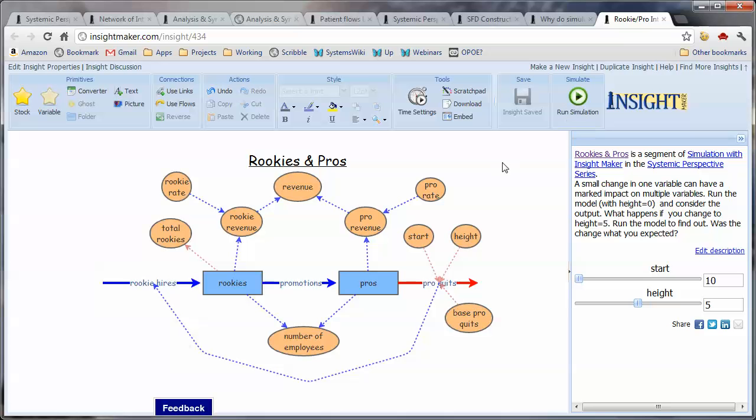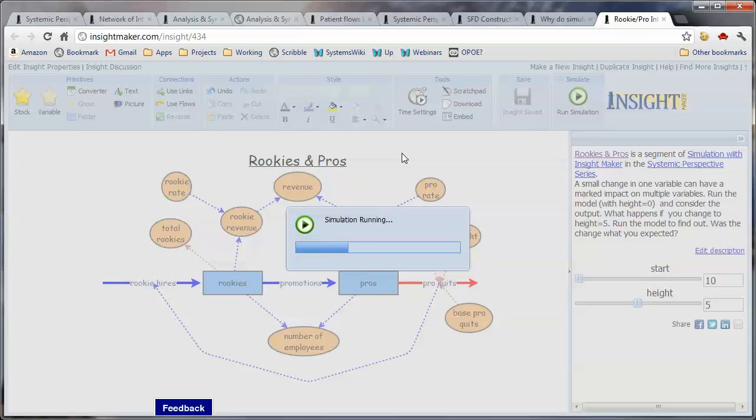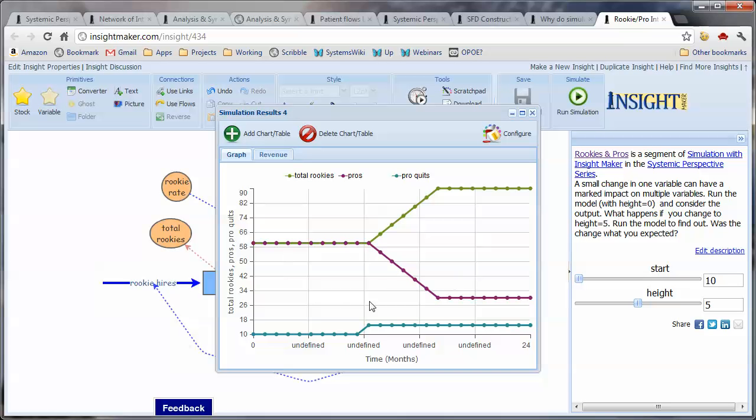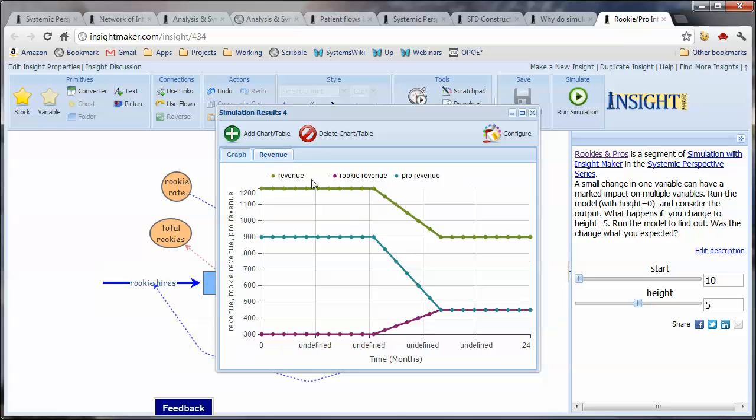We run the model and it will give us a sense that at this particular time, the change was from 10 to 15, but what that did was it set off a transition in the organization where the total number of rookies went from 60 to 90 and the total number of pros went from 60 to 30 and the organization re-stabilized at those levels. At the same time, the revenue within the organization, the pro revenue declined, the rookie revenue increased, and the total overall revenue for the organization declined.